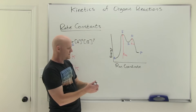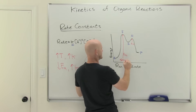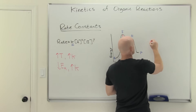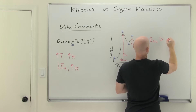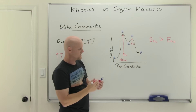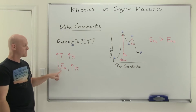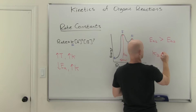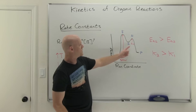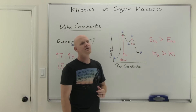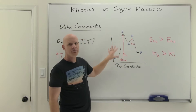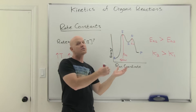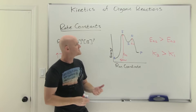We can clearly see that the first step has a much larger activation energy, so we call it the slow step, or rate-determining step. Activation energy one is much greater than activation energy two on this reaction coordinate diagram. Notice the inverse relationship between activation energy and rate constant — this means the rate constant for step two would actually be bigger than the rate constant for step one. They might give you a multi-step reaction mechanism, then a reaction coordinate diagram, and have you compare activation energies or rate constant values.